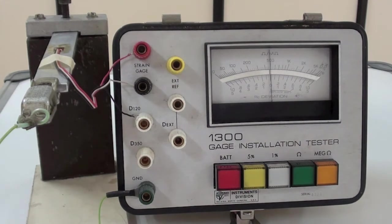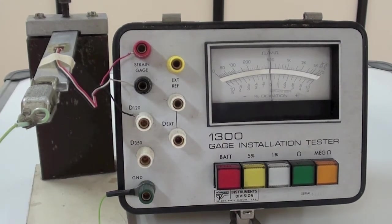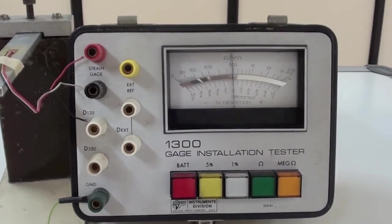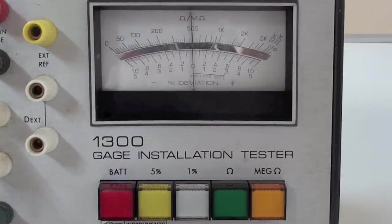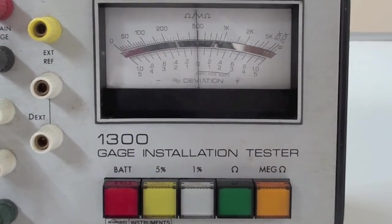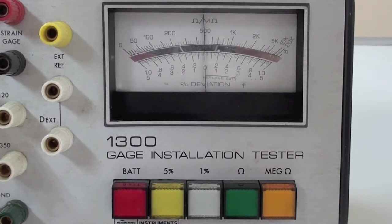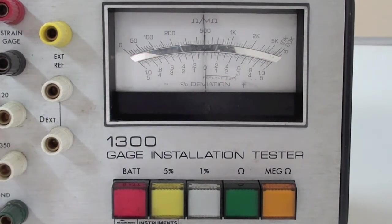For the gauge resistance check, the 1300 has two percentage deviation scales, 5% and 1% full scale. Properly bonded gauges would show a minimal deviation of their resistance, normally within the specified tolerance for the particular gauge.